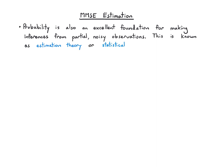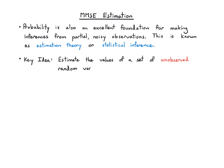You might also hear in statistics this idea of regression, which is related. The key idea is that you want to estimate the values of a set of unobserved random variables using the values of a set of observed random variables — so there are things you observe and things you don't, and you want to predict the unobserved from the observed.